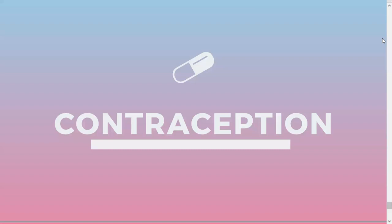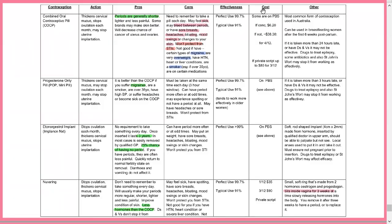Contraception — relevant for OSCEs. The combined oral contraceptive pill is easy, non-invasive, taken once a day at the same time for maximum efficacy. Benefits include shorter periods and reduced acne. Side effects vary widely: nausea, intermenstrual bleeding, headaches, bloating, mood swings. Always mention it does not protect against STIs. Don't give the combined pill to patients with aura migraines — use the progesterone-only pill instead, also for those who are overweight, over 35, or smokers.